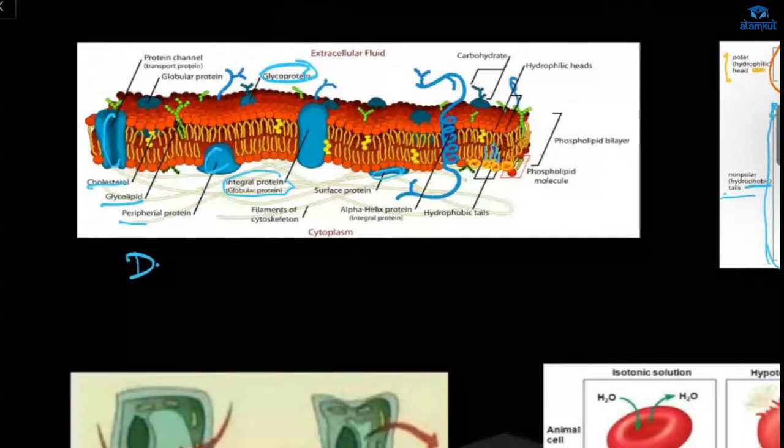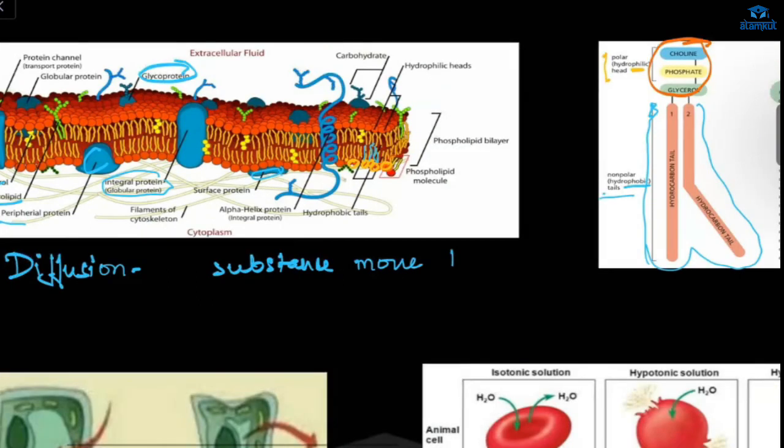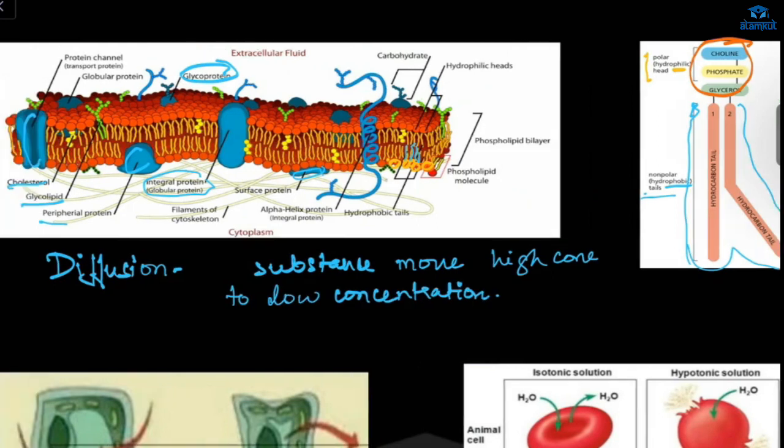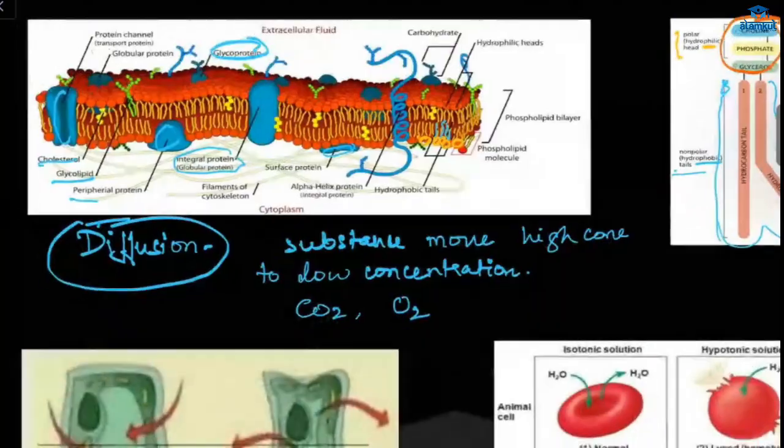First phenomena is diffusion. This is the process in which substance moves from high concentration to low concentration. Usually carbon dioxide and oxygen move through diffusion. It gets inside the cell by diffusion.